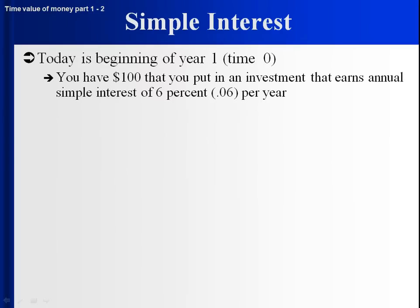Let's take an example. Today is the beginning of year one — we call it time zero. You have $100 that you put into an investment, and it earns simple interest of 6% per year.